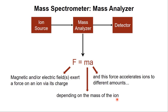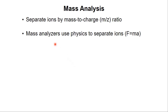The charge on the ion, which is important in the mass-to-charge measurement, affects the magnitude of the force that gets exerted on the ion. For example, an ion with two charges will experience twice the force of that of an ion with only a single charge. So far, we've learned that ions in mass spectrometry are separated by their mass-to-charge ratio, and mass analyzers use physics — essentially Newton's second law of motion — to provide that mass analysis.